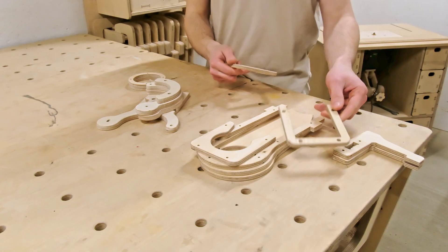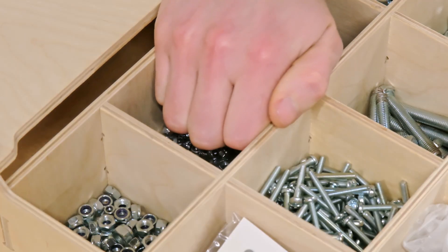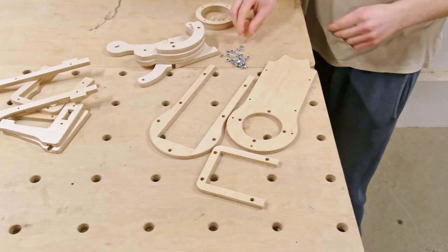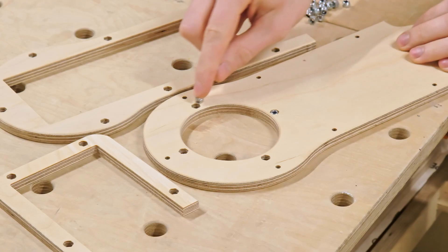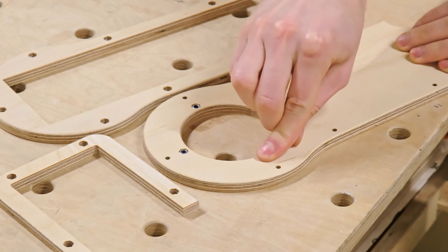As the first step, we are adding M4 lock nuts to the pockets we cut on the CNC router. Since we didn't leave any tolerance or toolpath offset, the lock nuts fit quite snugly, ensuring the nuts won't fall out during the assembly.